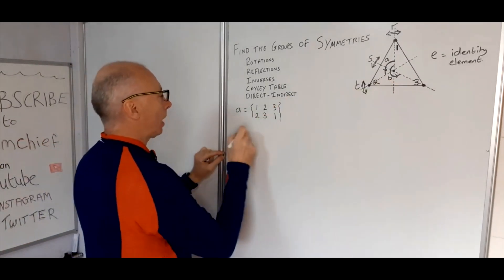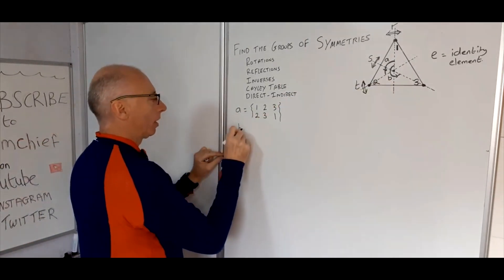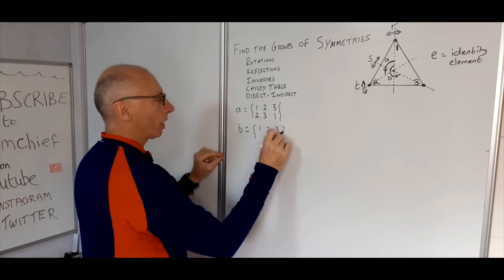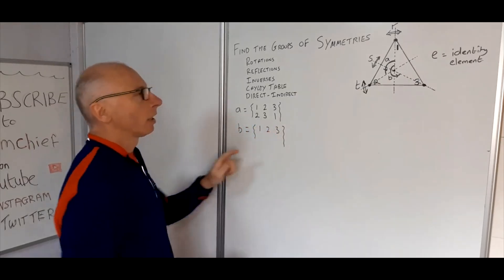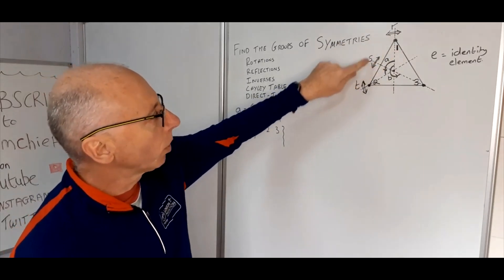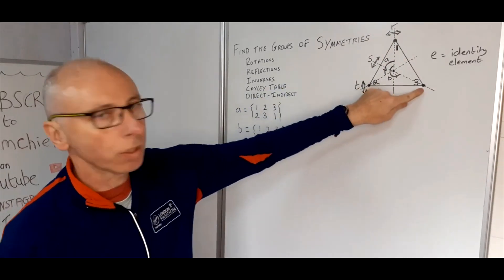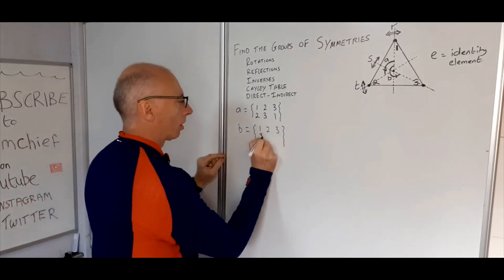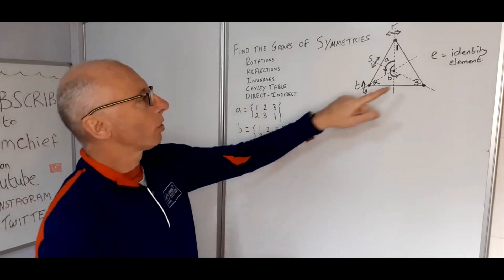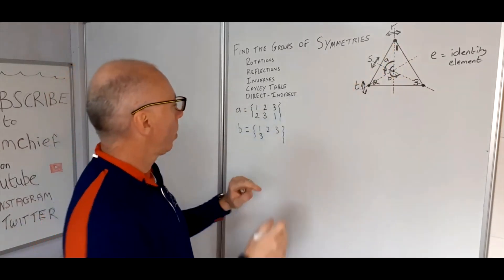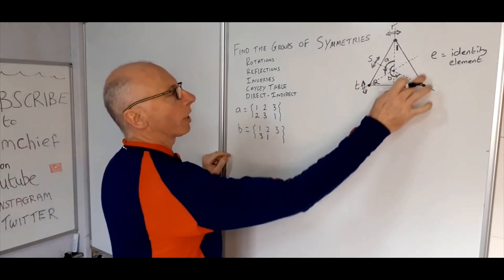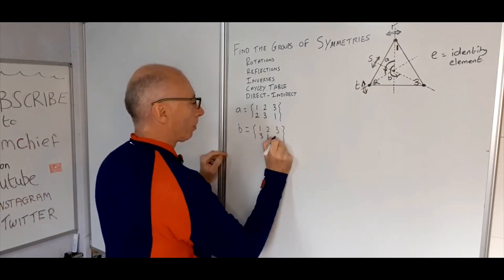Now let's look at B. Starting with points one, two and three — this is the rotation through 240 degrees. Point one is going to end up at point three, point two will end up at point one, and three will end up at two.